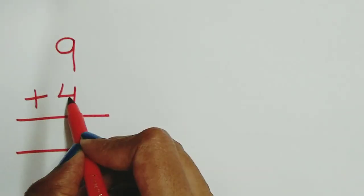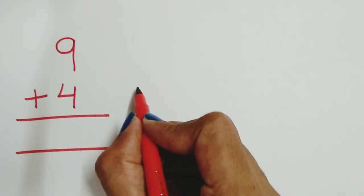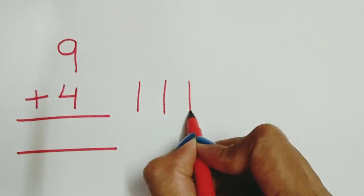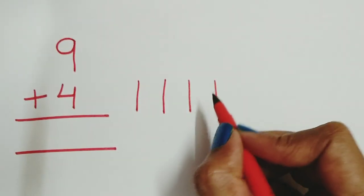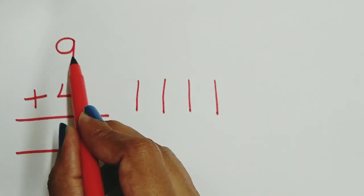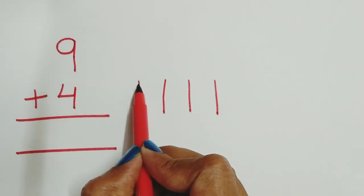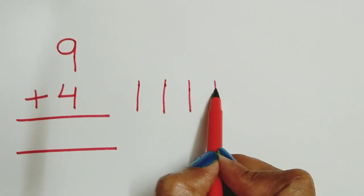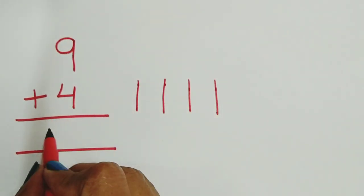Next question is 9 plus 4. Draw a line for the downward number, that is 4. And do forward counting after 9. That is 10, 11, 12, 13. And our answer is 13.